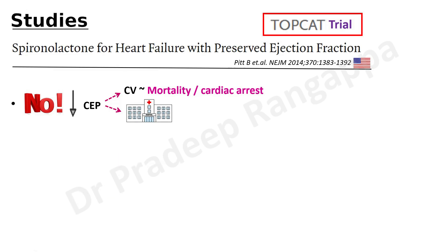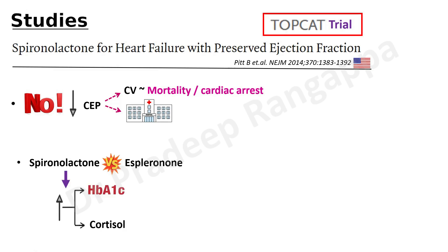Regarding additional advantages of eplerenone versus spironolactone: spironolactone has been shown to increase HbA1c and cortisol levels, which is not the case with eplerenone. Spironolactone also reduces adiponectin, contributing to fat accumulation and gynecomastia. These metabolic effects are not seen with eplerenone, making it a more advantageous choice particularly in cardiac patients who also have diabetes.